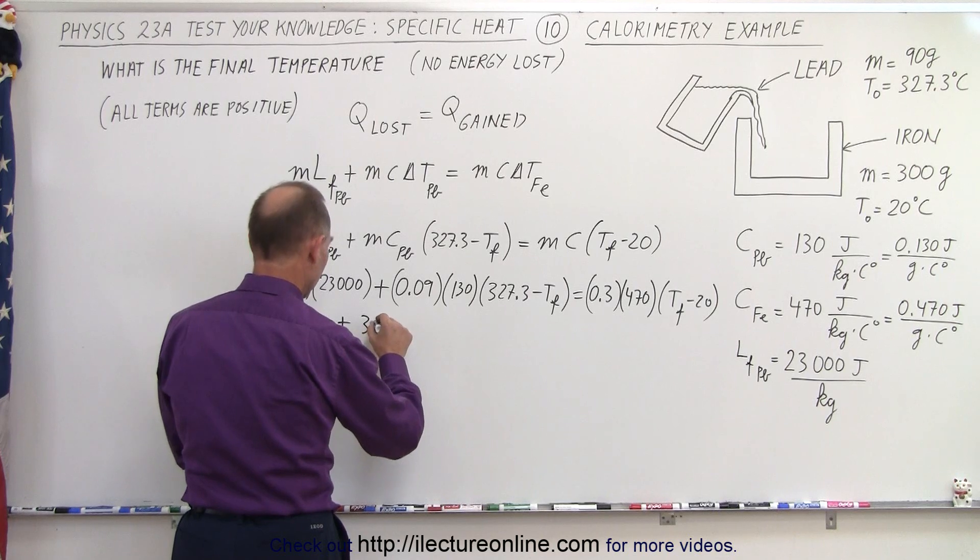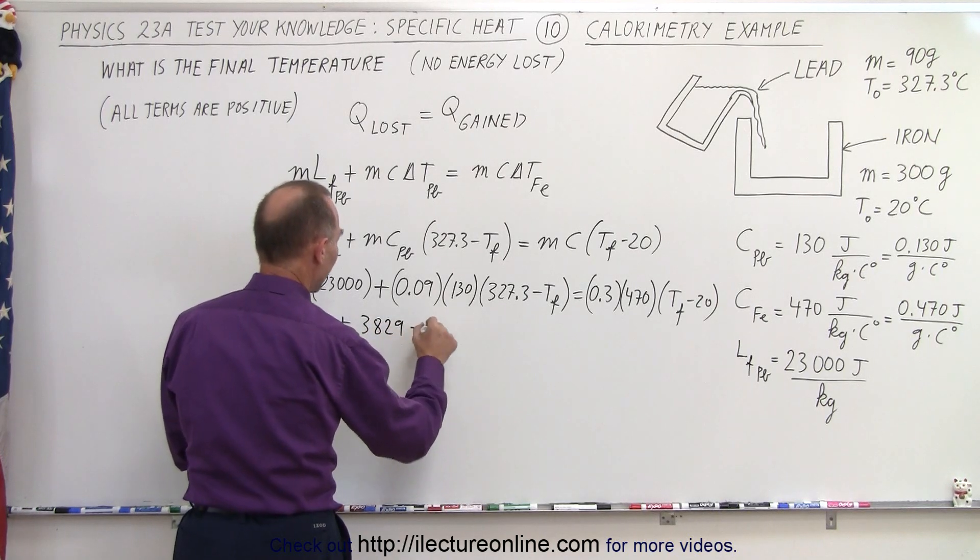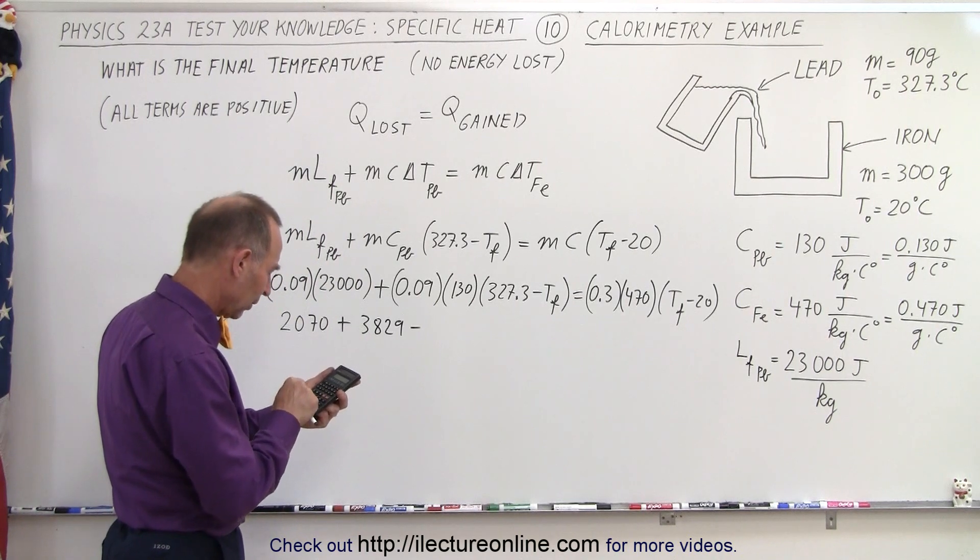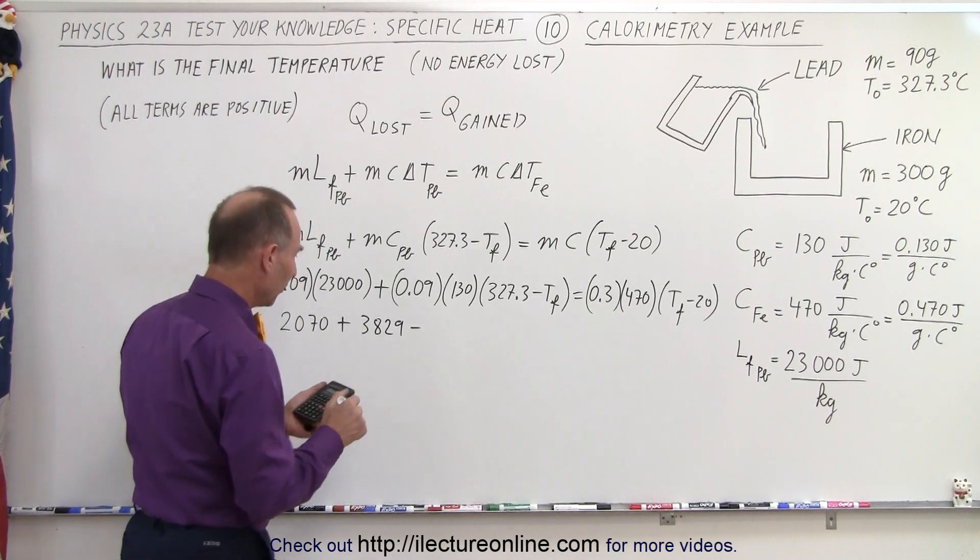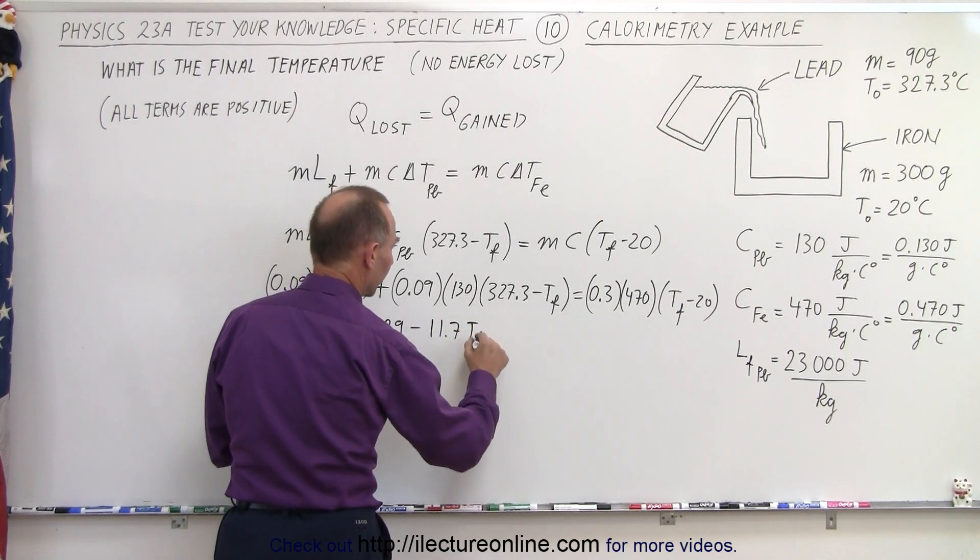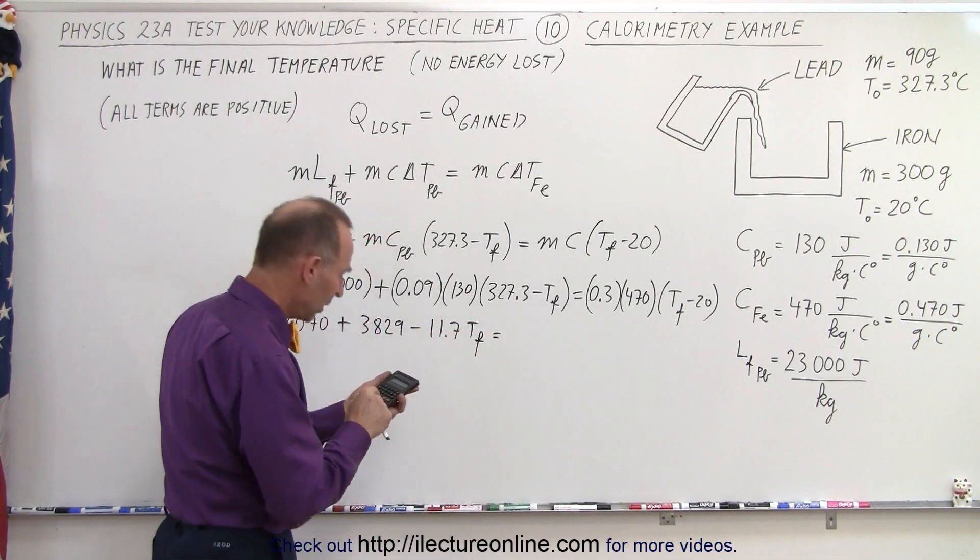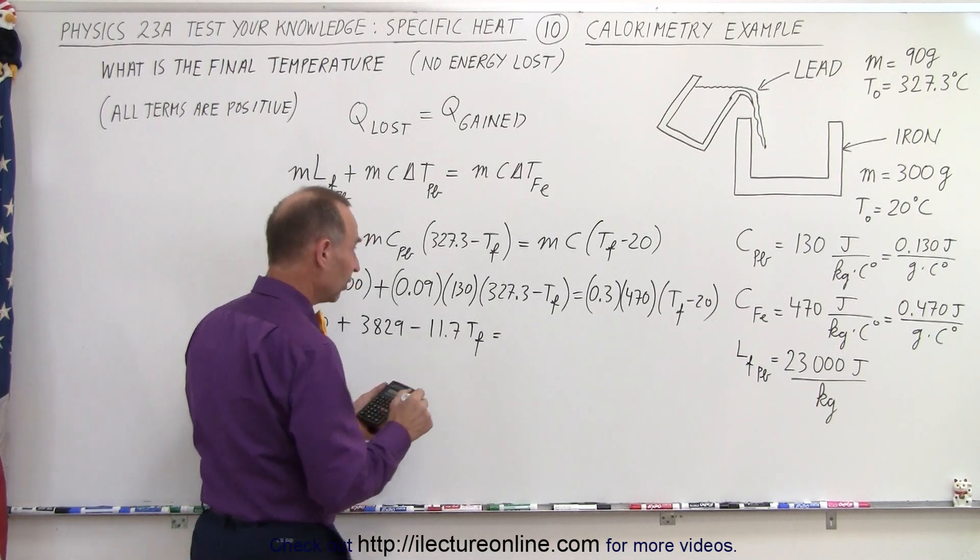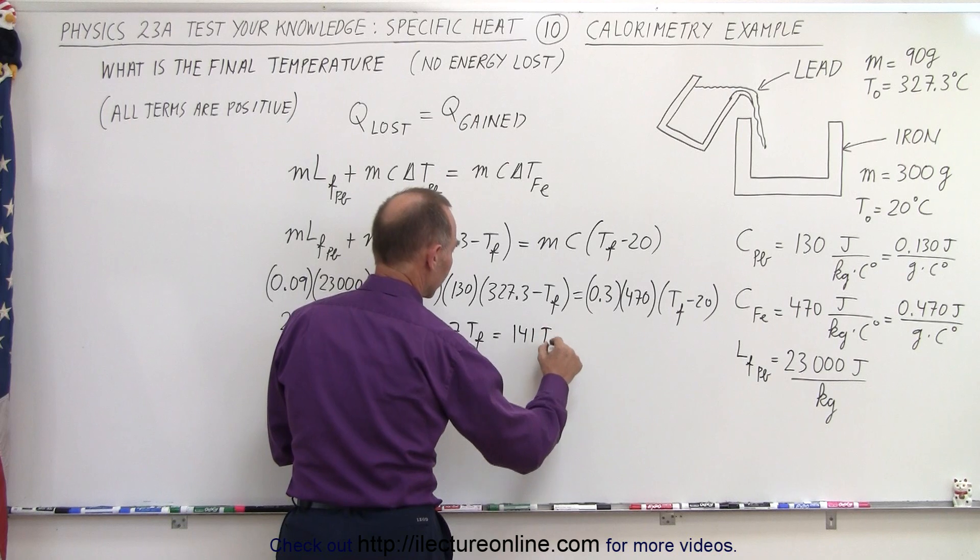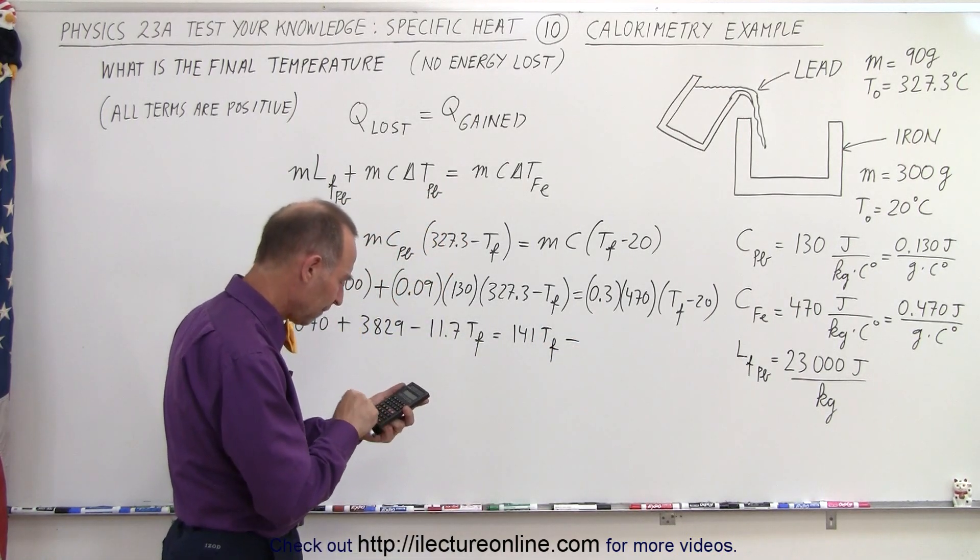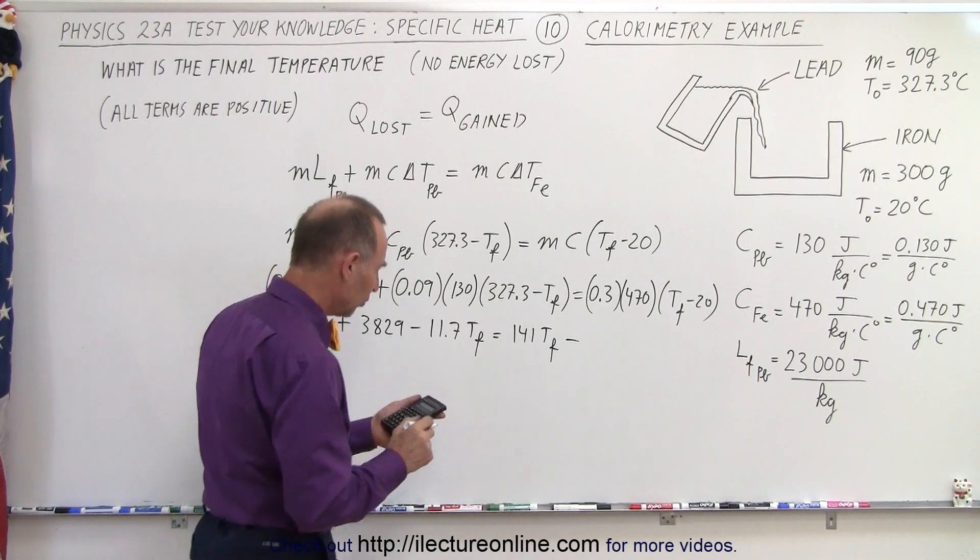That gives us 3,829, so plus 3,829 minus 0.09 times 130, 11.7 T final, equals, on the other side, we get 0.3 times 470, that's 141 T final, minus, multiply that times 20, we get minus 2820.